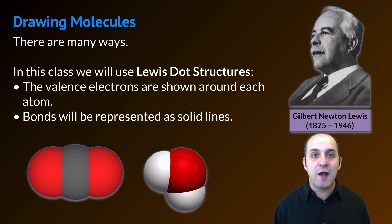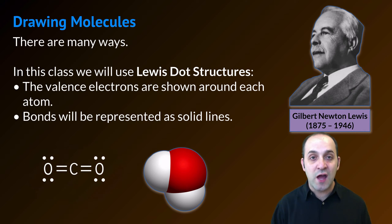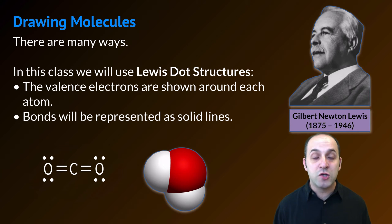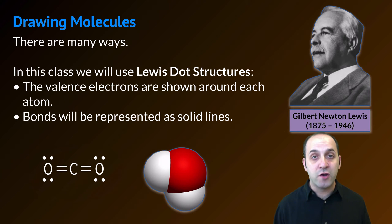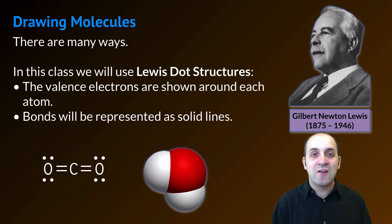Let's take carbon dioxide and water and represent them as Lewis dot structures. This is the Lewis dot structure for carbon dioxide. Carbon is covalently bonded to two different oxygen atoms. Both of those bonds are double covalent bonds, so each of those bonds represents four total electrons. Since carbon is making two double bonds it has access to its full eight valence electrons. Oxygen is making one double bond to carbon, giving it four of its valence electrons, and then each oxygen atom has four dots to represent the other four valence electrons, bringing both oxygen atoms' totals to eight valence electrons.